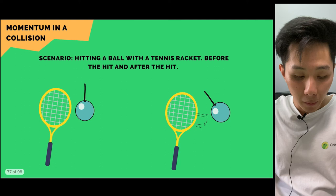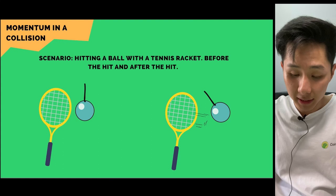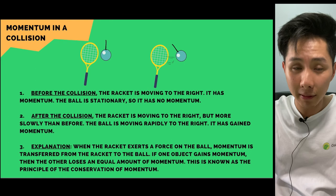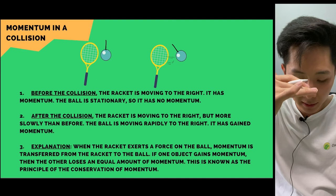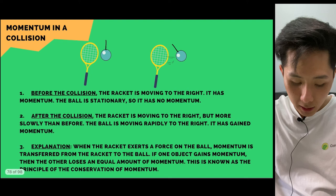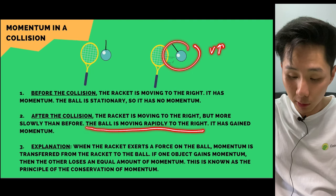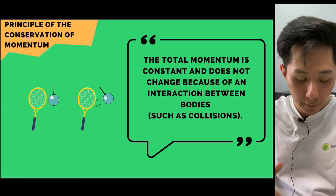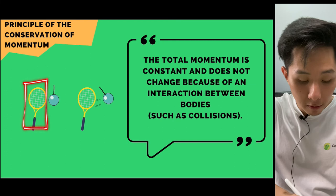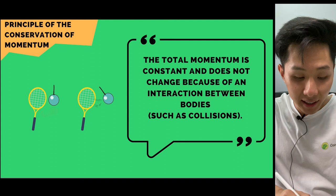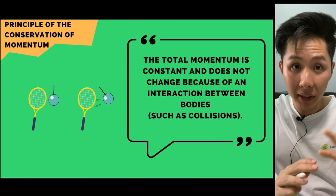Another momentum example: hitting a ball with a tennis racket. Before collision, the racket moves right and has momentum. After collision, the racket moves right but more slowly — momentum has been transferred to the ball, which now has increased velocity. This is the principle of conservation of momentum: the initial momentum is not lost but transferred. The total momentum before equals total momentum after.